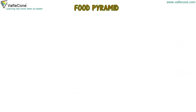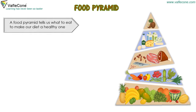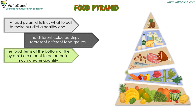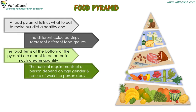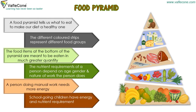A food pyramid tells us what to eat to make our diet a healthy one. Different colored strips represent different food groups. Food items at the bottom of the pyramid are meant to be eaten in much greater quantity. The nutrient requirements of a person depend on age, gender, and the nature of work they do. A person doing manual work needs more energy, and school-going children have their own energy and nutrient requirements.